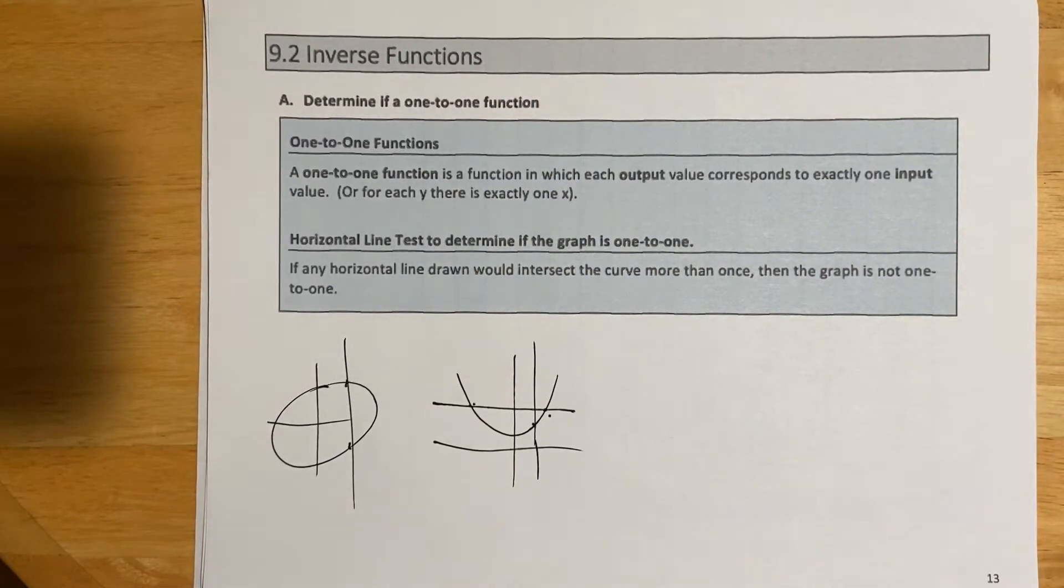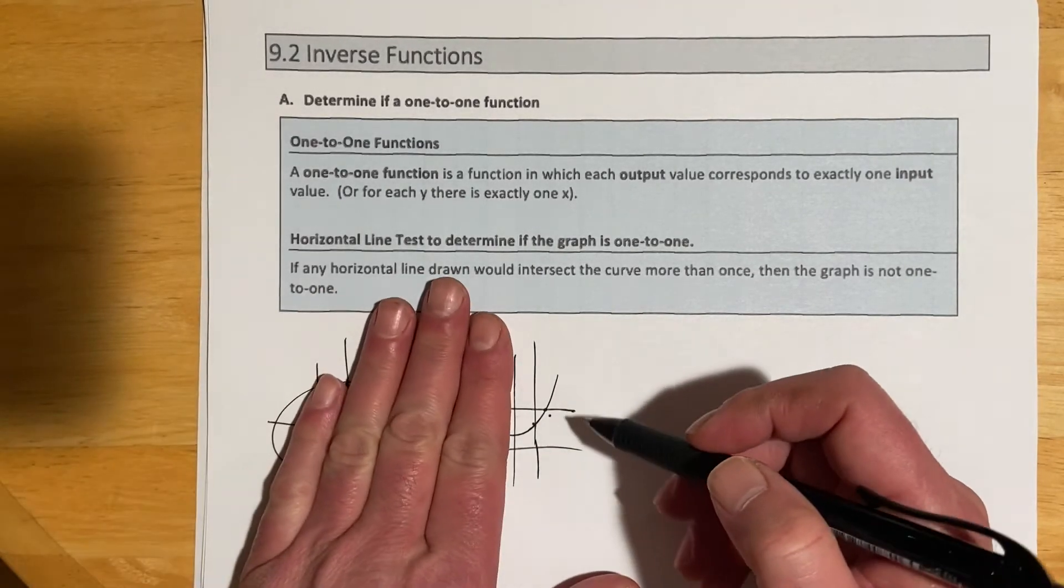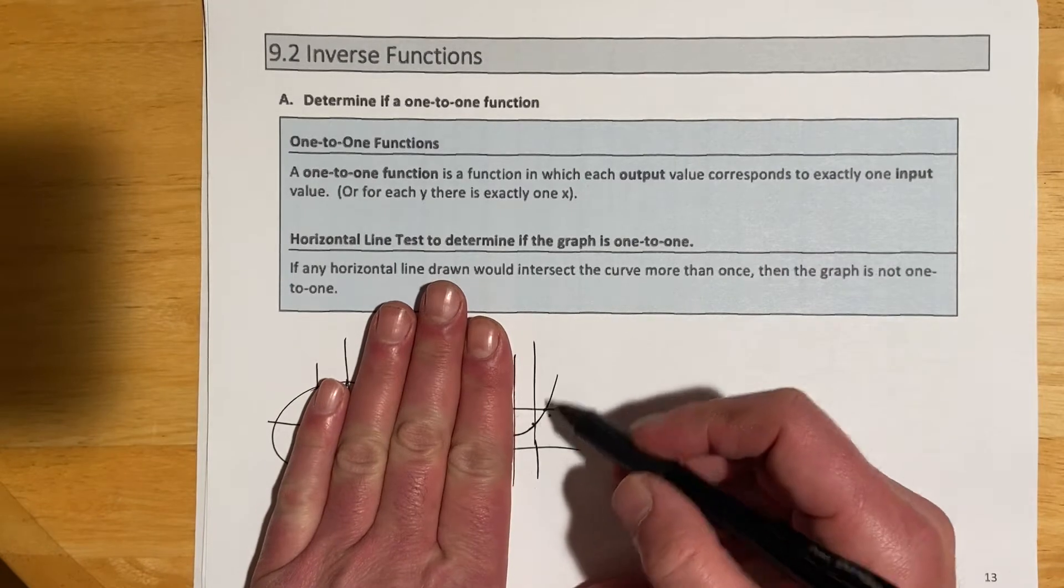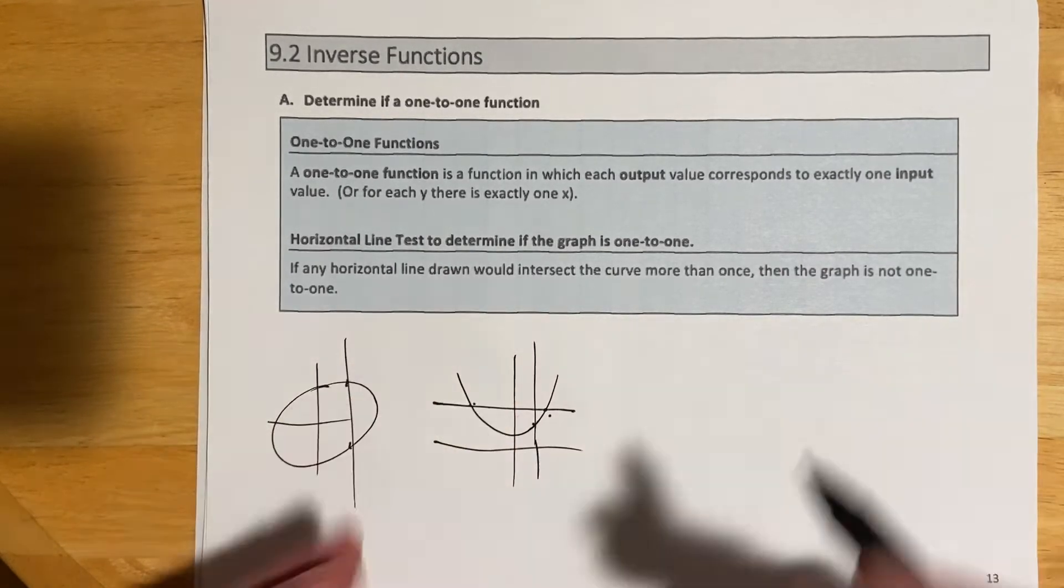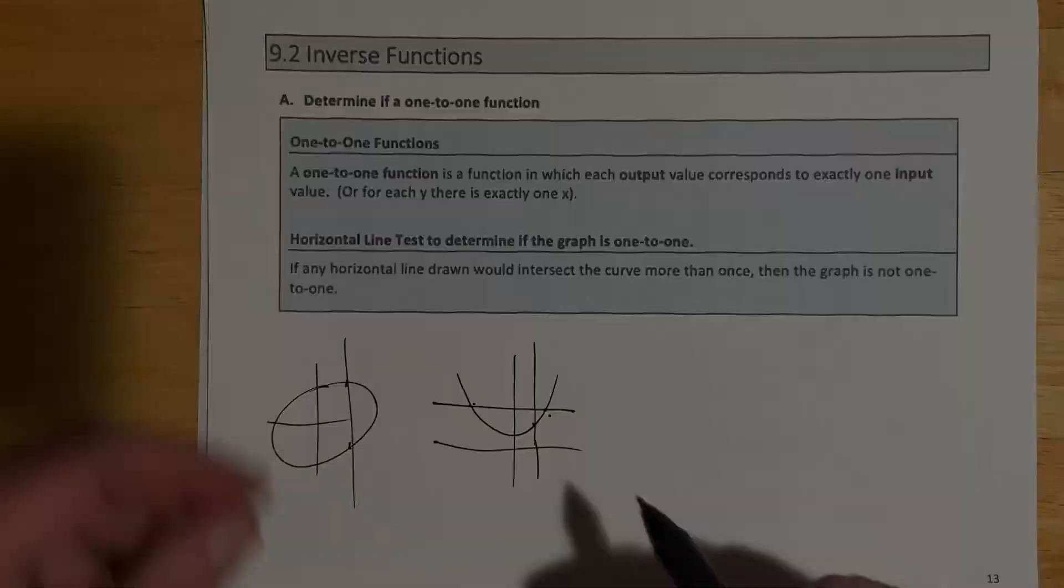You'll see at the end of the section, we can also do things where we say, okay, so this isn't one-to-one, but what if I only looked at this part of it? Then I can make it so the inverse exists. So we'll figure out how to limit the domain to do that.